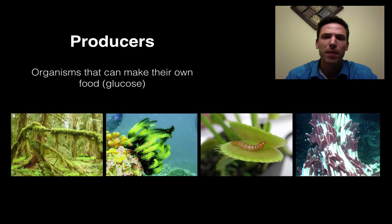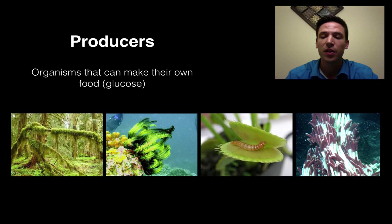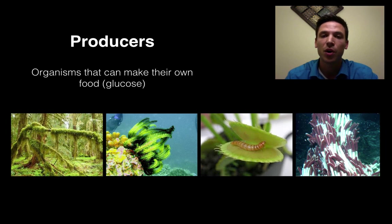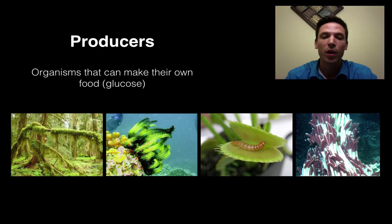What about organisms that live at the bottom or the aphotic zones of oceans, where there is no light? There are ecosystems down there — where are they getting their energy from? There is another process called chemosynthesis, not photosynthesis, where organisms like the tube worms seen in this picture use chemical energy, not sun energy, to make their own food. All four of these examples share one thing in common: these are organisms that are making their own food, so therefore they are called producers.